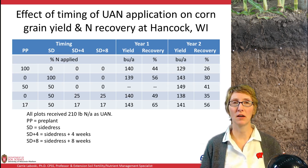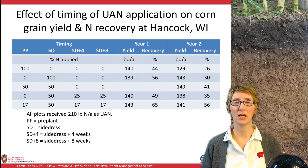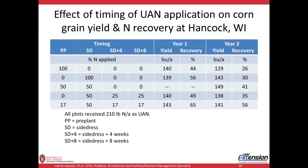To look at some examples of the effect of timing and UAN application, here we have corn grain yield and nitrogen recovery at Hancock, Wisconsin — a sandy soil. With our timing of applications we have pre-plant, side dress, side dress plus four weeks after side dress, and side dress plus another application eight weeks after that initial side dress. The percentage of nitrogen of the total N applied is shown and broken down — for example, the bottom treatment had 17% applied pre-plant, 50% at side dress, and 17% each at four weeks and eight weeks after side dress. The total N application for each treatment was 210 pounds of N per acre, all as UAN solution, conducted over two years.